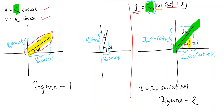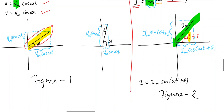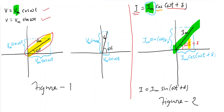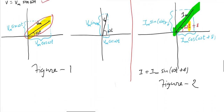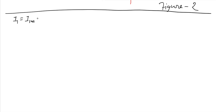So why do we need phasor? One reason is that graphical representation is always better and more clear compared to a mathematical equation. A second very important reason is: suppose in some circuit you have a current in one arm as i1 = I1m cos(ωt + δ1)...